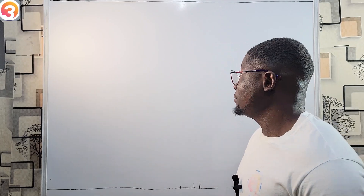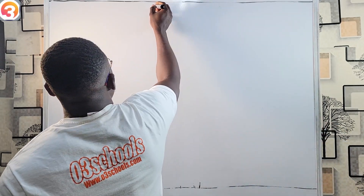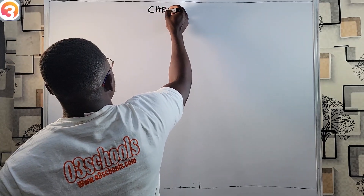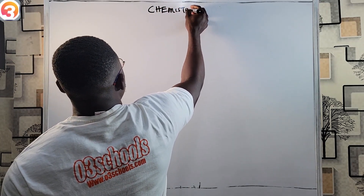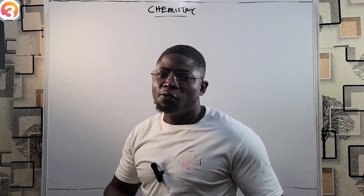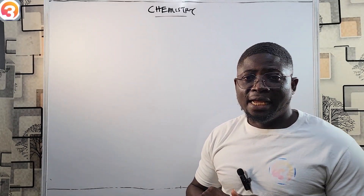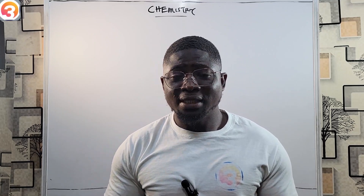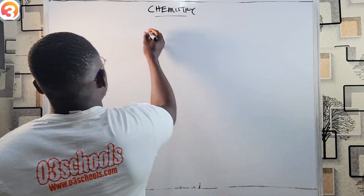Hi there and welcome back to JAMB chemistry class. In this class we are going to be looking at the spin quantum number. Earlier we have discussed the principal quantum number, the azimuthal or subsidiary quantum number, the magnetic quantum number, and this is the last quantum number — the spin quantum number.